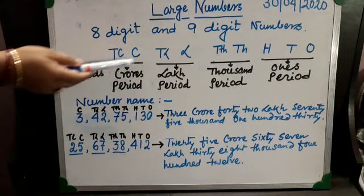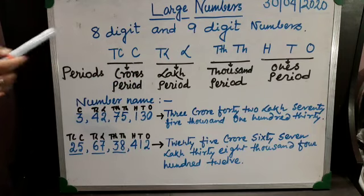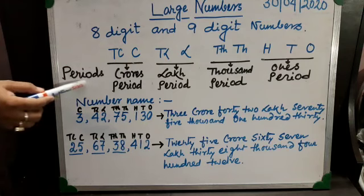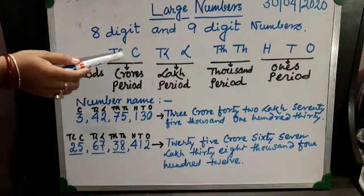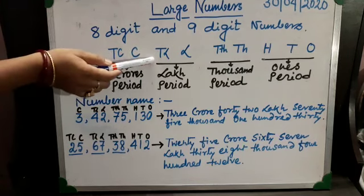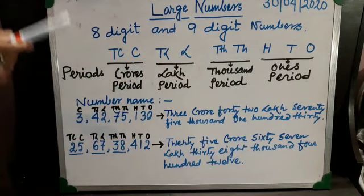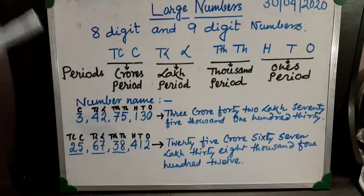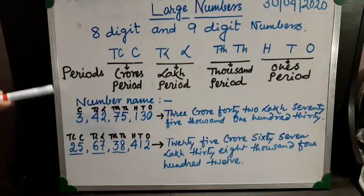ten thousand, lakh, ten lakh, and the two new places we are learning about — that is crore and ten crore. So ten crore and crore both come in the crores period. Ten lakh and lakh come in the lakh period. Ten thousand and thousand come in the thousands period. Hundreds, tens and ones come in the ones period.